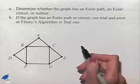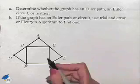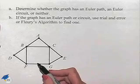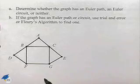To determine whether or not we have an Euler path or an Euler circuit, we're going to look at the degree of the vertices. What's really important is whether we have even or odd vertices in the graph. So let's begin.